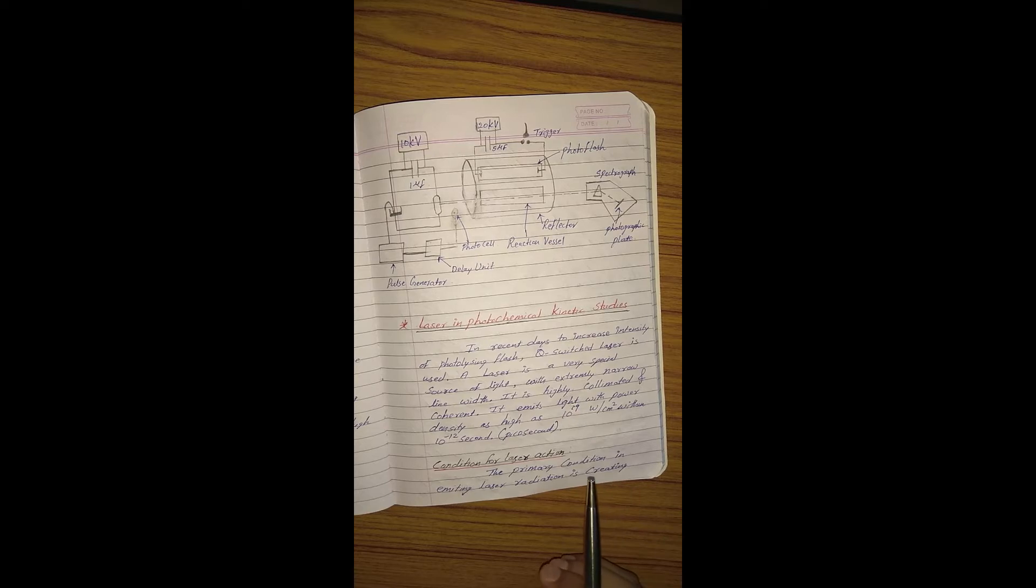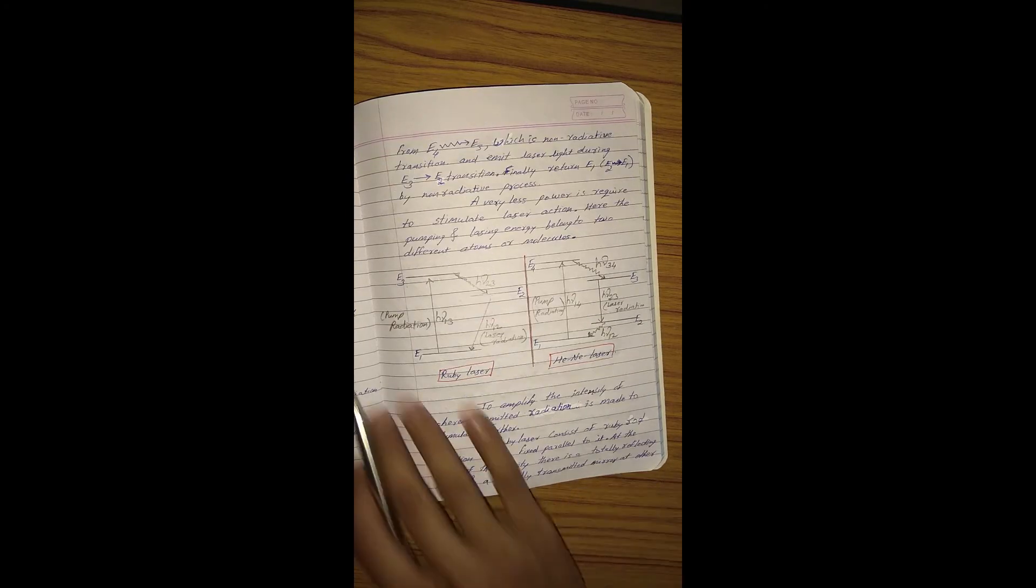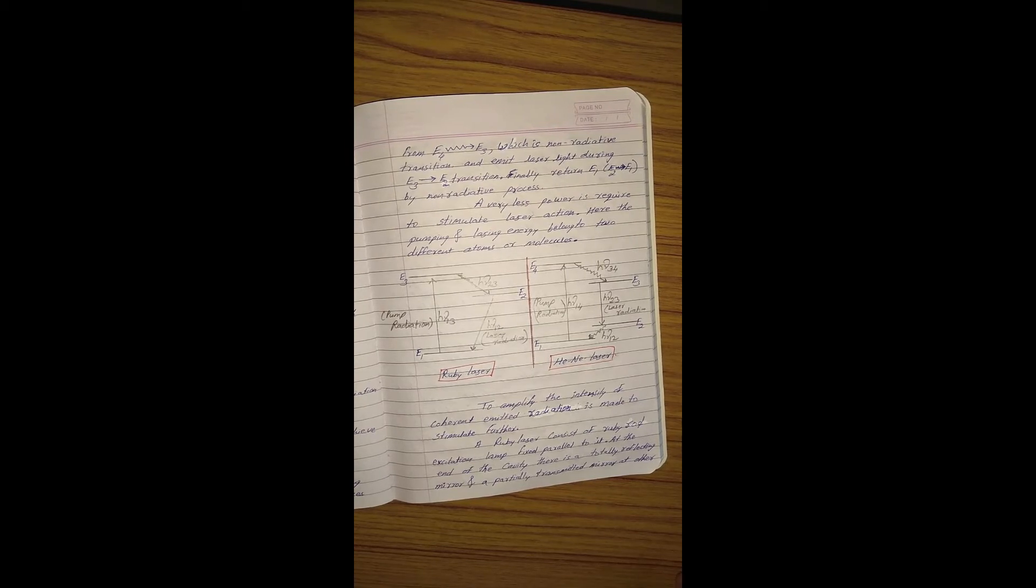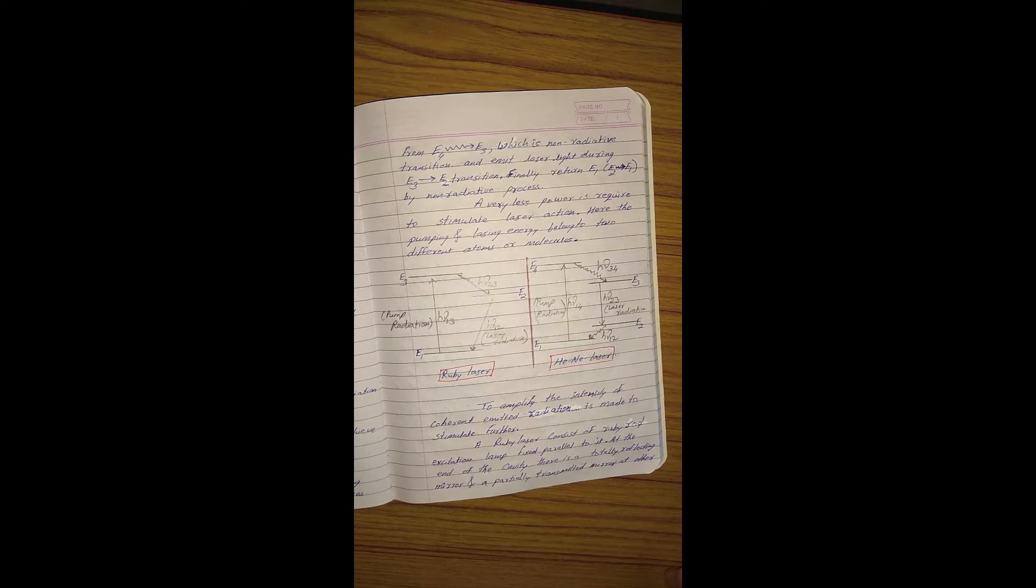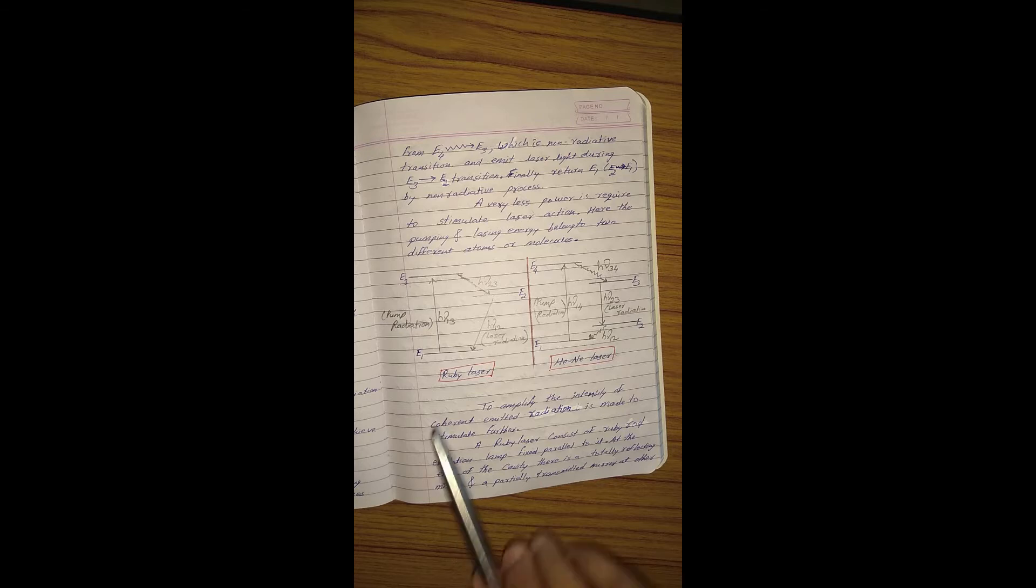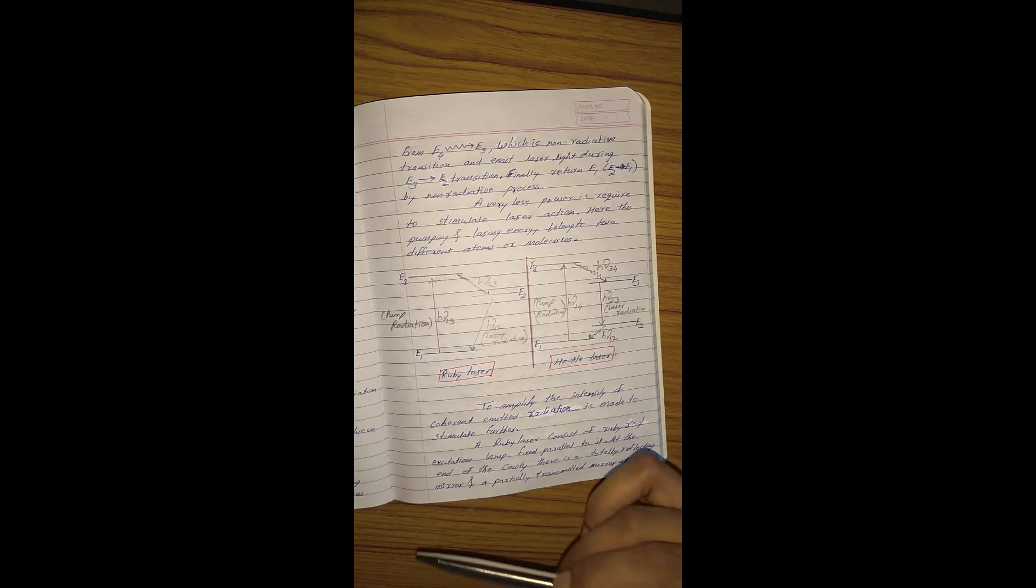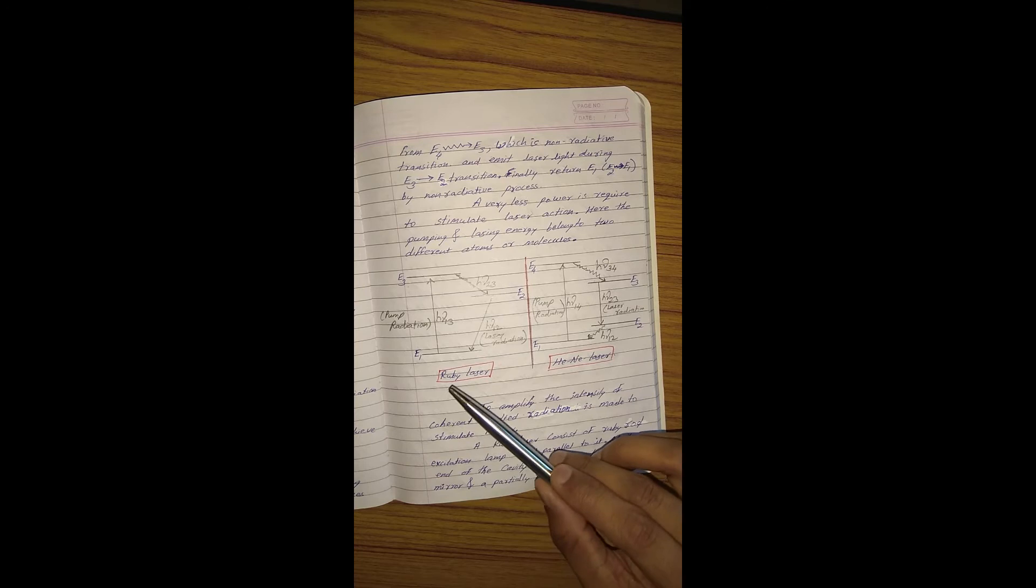Generally, for laser action, there should be a creation of population inversion. Population inversion means normally, after absorbing radiation when the molecule gets excited, there should be a difference between the number of molecules in the excited state and the ground state. If both numbers are equal, it doesn't support this population inversion concept. To get the difference in the number of molecules in excited and ground state, we have to consider more than two energy levels.